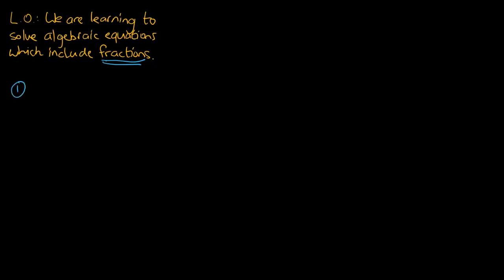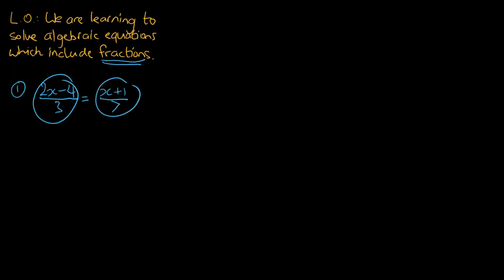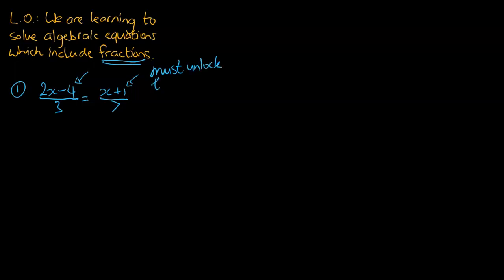So question number one. Let's say we've got 2x minus 4 as the numerator and the denominator is 3. That fraction is equal to x plus 1 over 7. So we can see there are two fractions here and our job is to go ahead and solve this. When you're dealing with fractions, you can't really get to the numerators until you've unlocked them. So we must unlock the numerator.